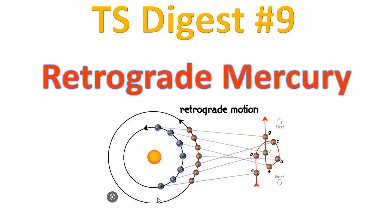By the way, this is a picture from the Quora website. It shows you Earth and Mars, and it shows how Mercury and Mars retrograde periods work. We observe Mars from different points — both planets move — and sometimes we see that Mercury, or Mars, moves retrograde.